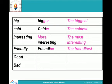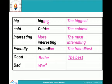Let us look at the complete forms: big→bigger→the biggest. Cold→colder→the coldest. Interesting→more interesting→the most interesting. Friendly→friendlier→the friendliest. Good→better→the best. Bad→worse→the worst.